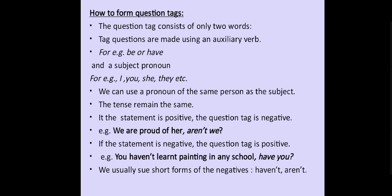Now let's learn how to form a question tag. The question tag consists of only two words. Tag questions are made using an auxiliary verb — for example, 'be' or 'have' — and a subject pronoun, for example: I, you, she, they, he, etc. We can use a pronoun of the same person as the subject. The tense remains the same — this is most important.